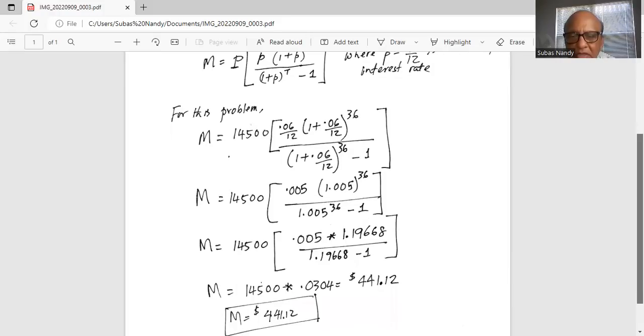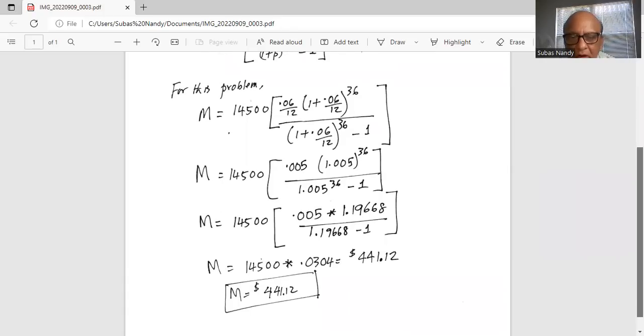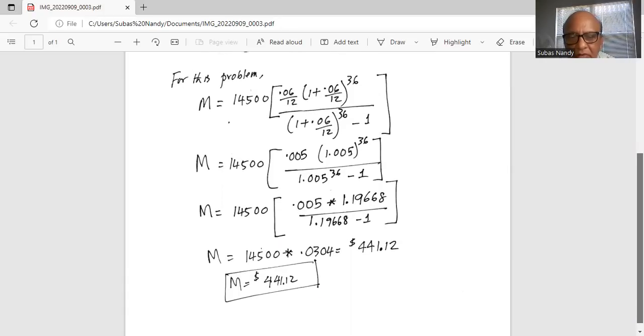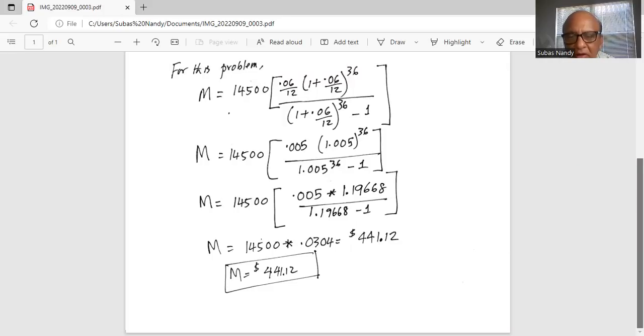That is 1.19668 divided by 1.19668 minus 1. Or M is equal to 14,500 multiplied by 0.0304. So my monthly installment payment is $441.12.